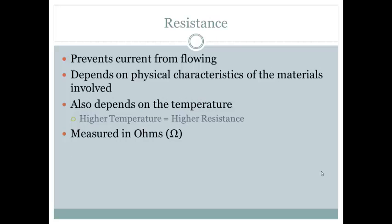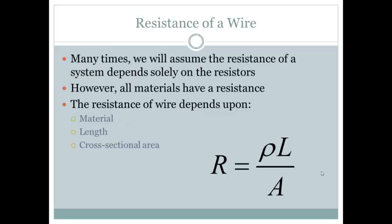What prevents the current from flowing through is called resistance, and this depends on the physical characteristics of the materials involved. It also depends on the temperature of the substance. Higher temperature means more resistance because the particles in that material are moving around more often, so they are getting in the way of the charge flowing through more commonly. Resistance is measured in the unit ohms, which is named after the famous scientist Ohm. And he actually came up with something very important that we're going to look at now, and that's called Ohm's Law.